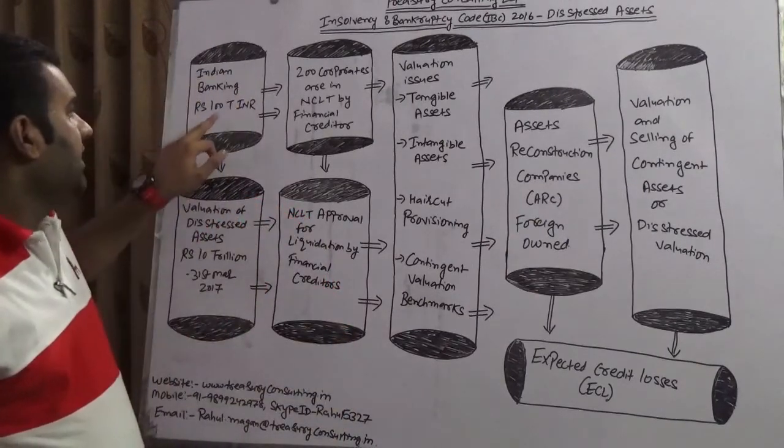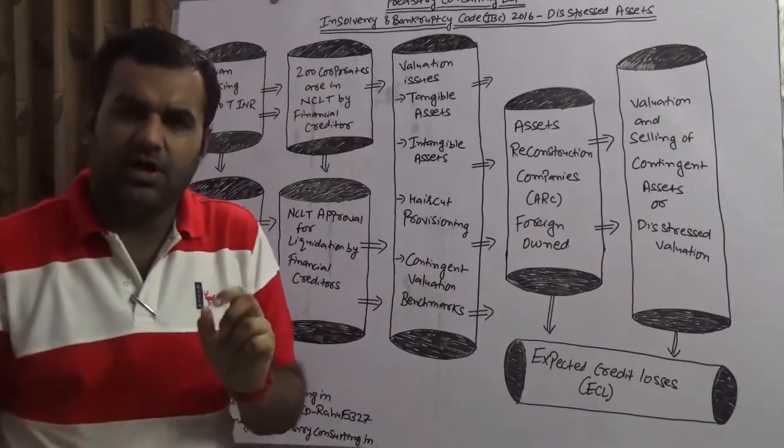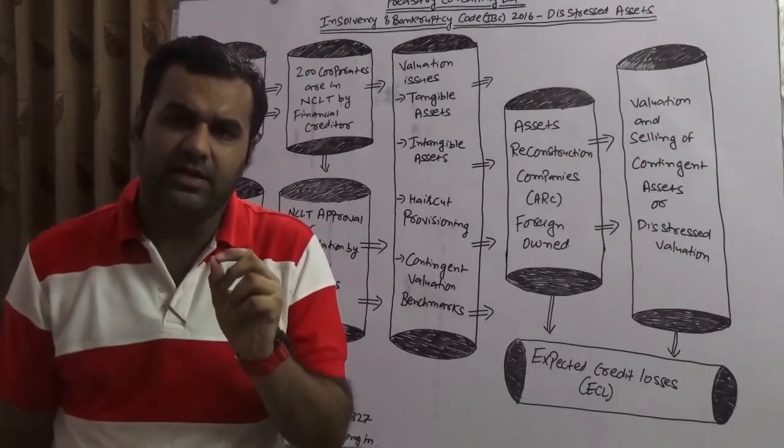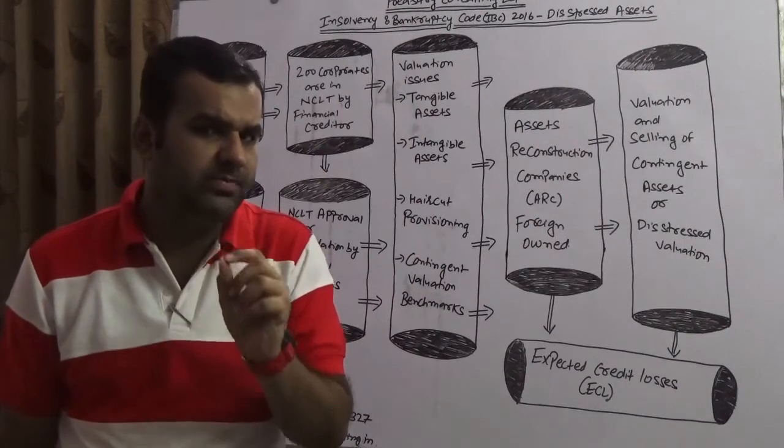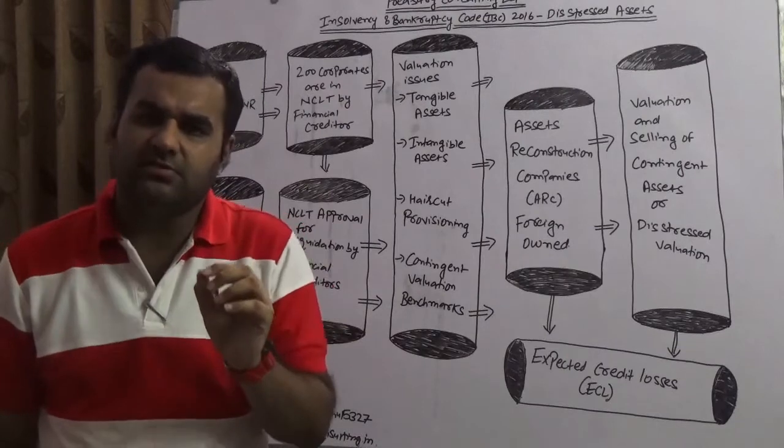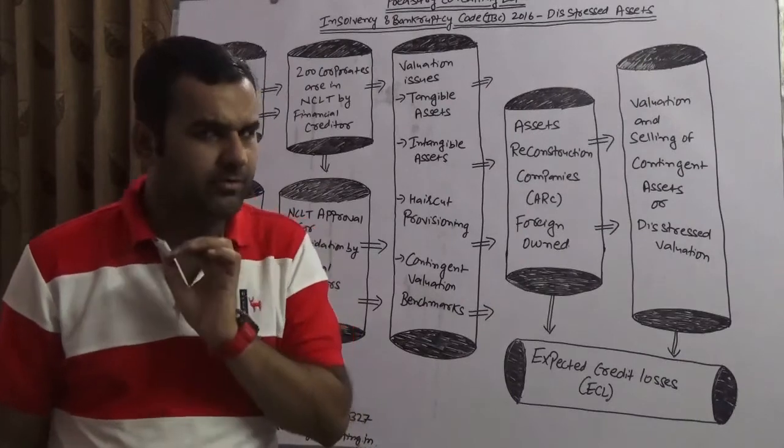Sitting today, the Indian banking is approximately 100 trillion INR. Now 1 trillion is 1,000 billion Indian Rupee and 1 billion is 1,000 million Indian Rupee and 1 million is 10 lakh Indian Rupee. This much amount is the size of the Indian banking as far as the research reports are concerned which are very well available in the public domain.